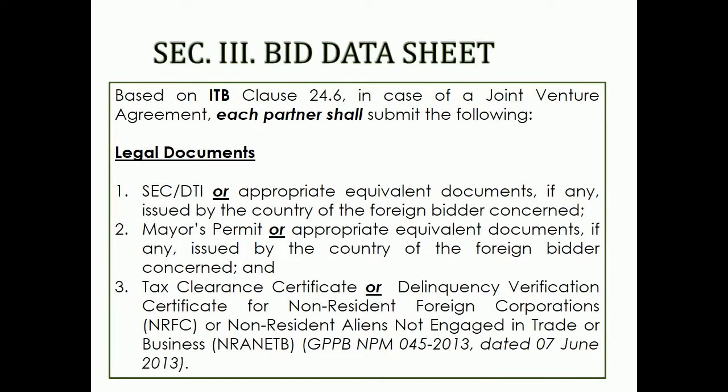Based on ITB clause 24.6, in case of a joint venture agreement, each partner shall submit the following. Legal Documents: SEC or DTI or Appropriate Equivalent Documents, if any, issued by the country of the foreign bidder concerned. Mayor's Permit or Appropriate Equivalent Documents, if any, issued by the country of the foreign bidder concerned. Tax Clearance Certificate or Delinquency Verification Certificate for non-resident foreign corporations or non-resident aliens not engaged in trade or business.